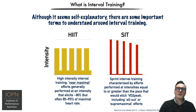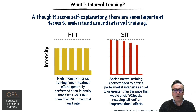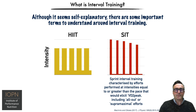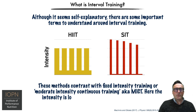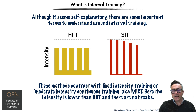Then we also have sprint interval training, or SIT training. Sprint interval training is characterized by efforts performed at intensities equal to or greater than the pace that would elicit VO2 peak, including all-out or supramaximal efforts. These methods contrast with fixed intensity training, better known as moderate intensity continuous training, also known as MICT. Here the intensity is lower than HIIT training and there are no breaks.